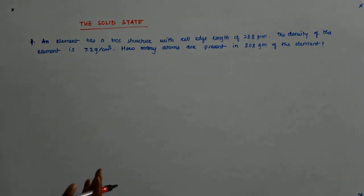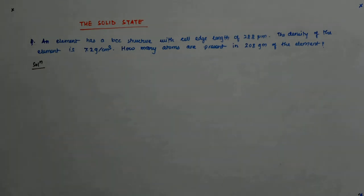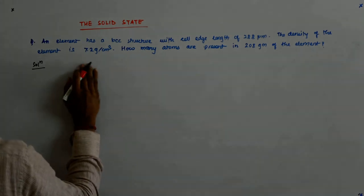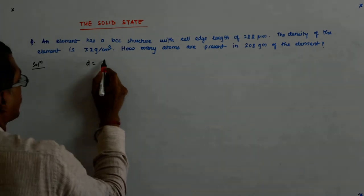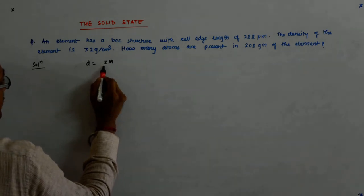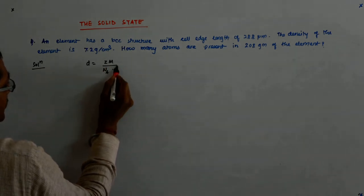How many atoms are present in 208 grams of the element? So I know the formula where D is equal to Z M upon NA a cube.